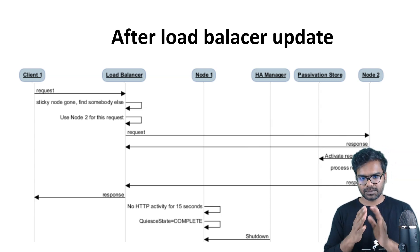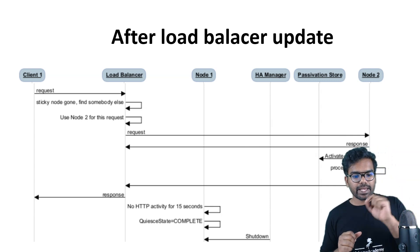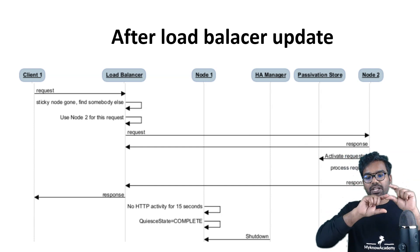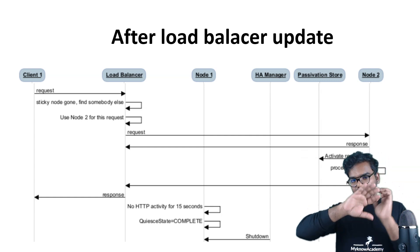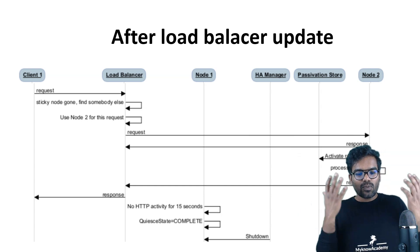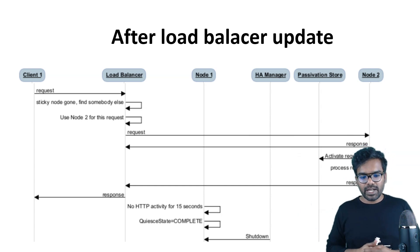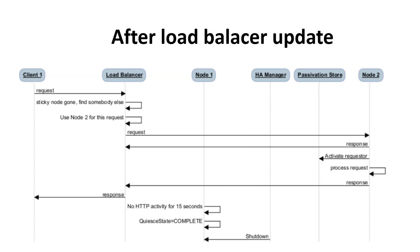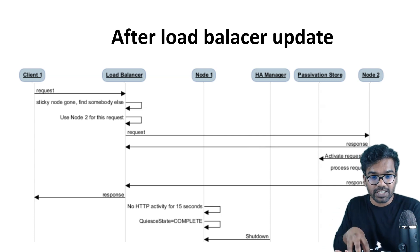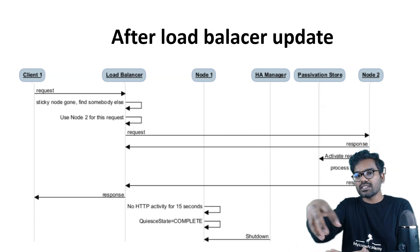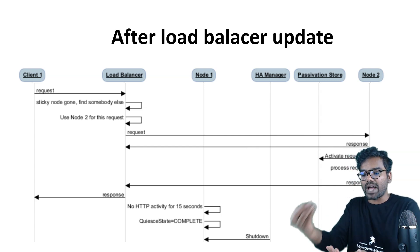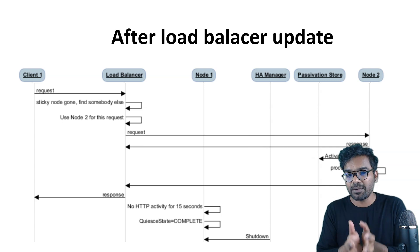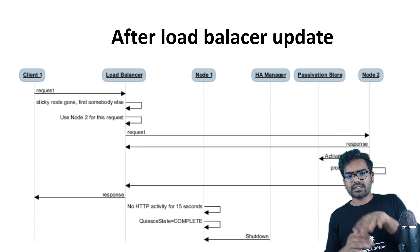After the load balancer is updated: the same client makes another request, but now the sticky node is gone because sticky sessions was enabled — that is why the load balancer was routing to node 1. Now with the J-session ID the load balancer needs to route to node 1, but node 1 is not available. So the load balancer finds node 2 instead. When requesting to node 2, it activates the requestor because it was already passivated into the persistent storage. Since all servers share a common DB, node 2 easily activates the requestor — getting all clipboard pages, threads, everything into memory — processes the request, and sends the response.